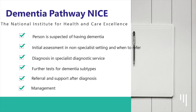There is a clear pathway that has been set out by the National Institute for Health and Care Excellence. It begins when a person is suspected of having dementia. There is then an initial assessment in non-specialist settings, where a decision will be made to refer for a diagnosis in a specialist diagnostic service. There will then be further tests for dementia subtypes, referral and support after diagnosis, and then management.